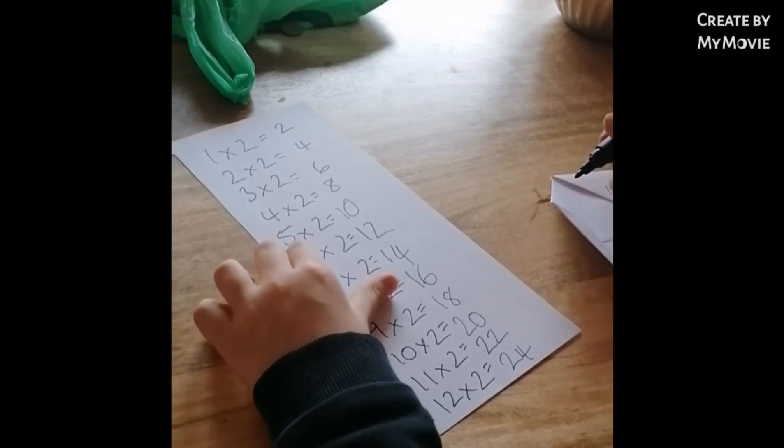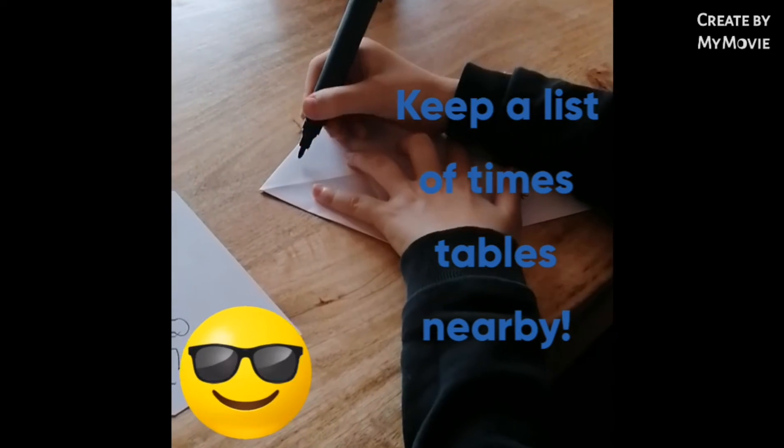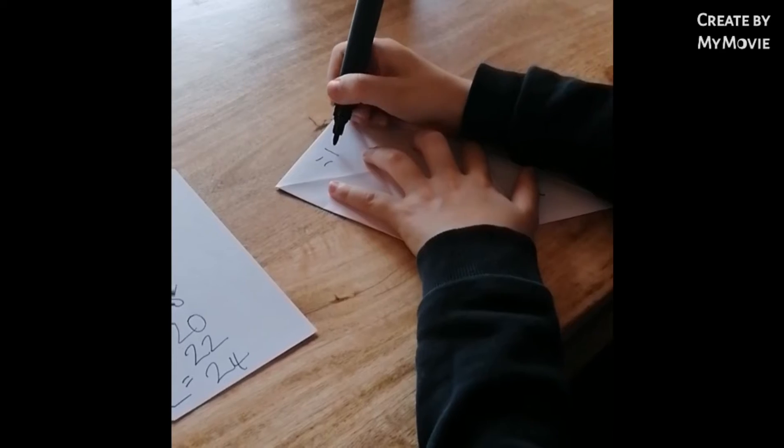If you have a piece of paper, you can write like six times two equals twelve, and then you put the answer in here. Equals twelve.